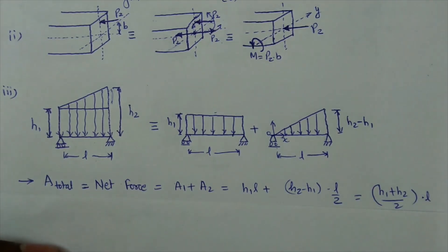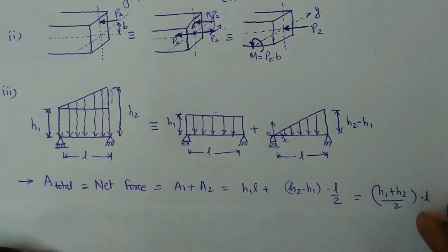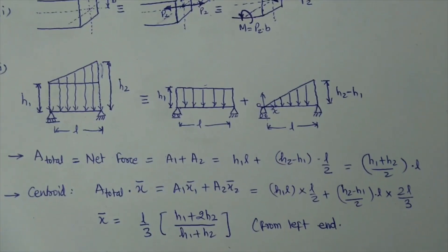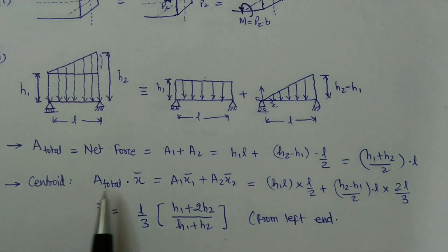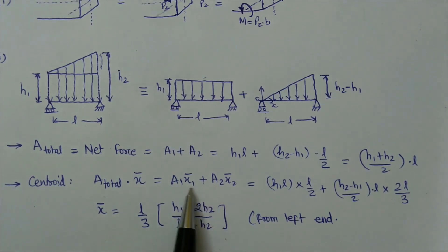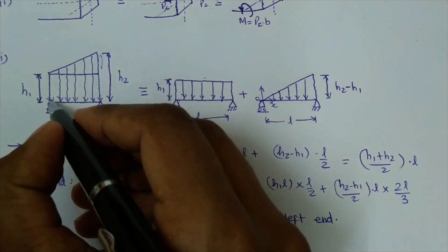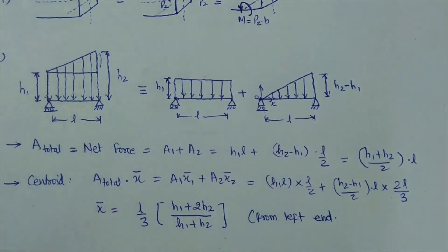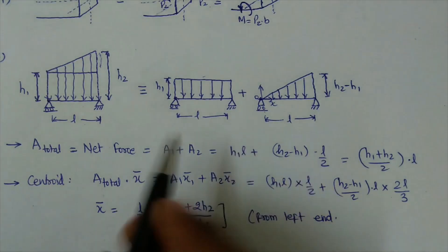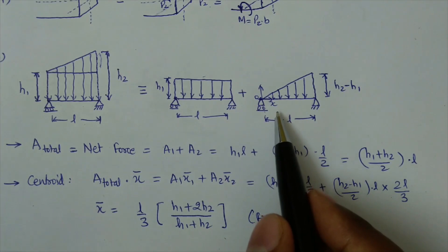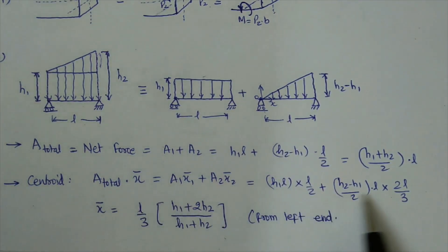To calculate the centroid, the basic formula is: total area times centroid equals the summation of all individual areas times their individual centroids. All values of x1, x2, and x are measured from a single reference point. In our case, we take the left end as the reference point. Using A1*x1_bar plus A2*x2_bar divided by total area gives the centroid location.